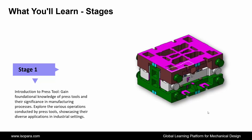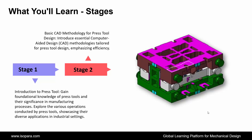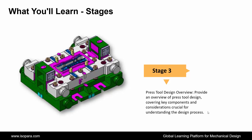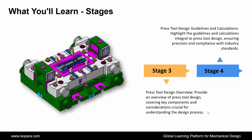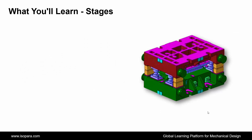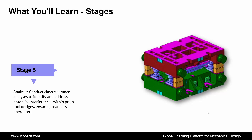First is Introduction to Press Tool: Gain foundational knowledge of press tools and their significance in manufacturing processes. Explore the various operations conducted by press tools, showcasing their diverse applications in industrial settings. Second is Basic CAD Methodology for Press Tool Design: Introduce essential computer-aided design methodologies tailored for press tool design, emphasizing efficiency. Third is Press Tool Design Overview: Provide an overview of press tool design, covering key components and considerations crucial for understanding the design process. Fourth is Press Tool Design Guidelines and Calculations: Highlight the guidelines and calculations integral to press tool design, ensuring precision and compliance with industry standards. Fifth is Analysis: Conduct clash clearance analysis to identify and address potential interferences within press tool designs, ensuring seamless operation.